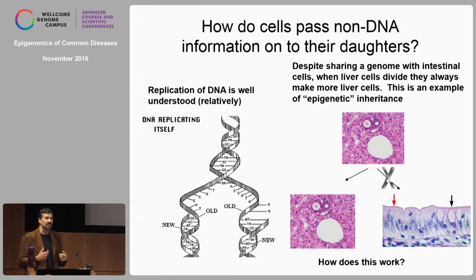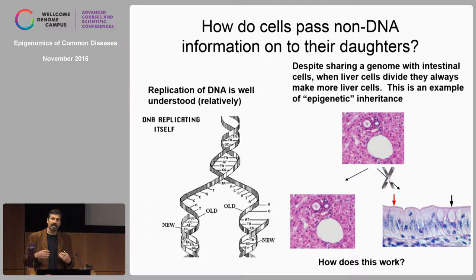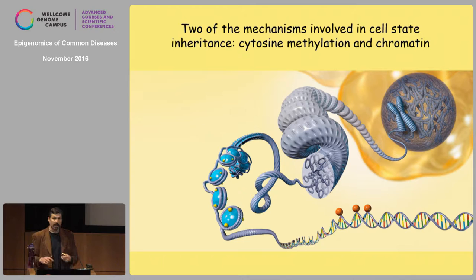My lab is interested in epigenetic inheritance. For this meeting we want to make the distinction between epigenetic inheritance and epigenetic marks. Something that is epigenetically heritable is a phenotype that differs between two organisms with the same genome, but can be inherited in a non-DNA-based manner. The classic version of this is cell state inheritance: all the cells in your body have the same genome, but when a liver cell divides it never makes a skin cell or a kidney cell, despite sharing the same genome. So 'liver-ness' is an epigenetically heritable state.